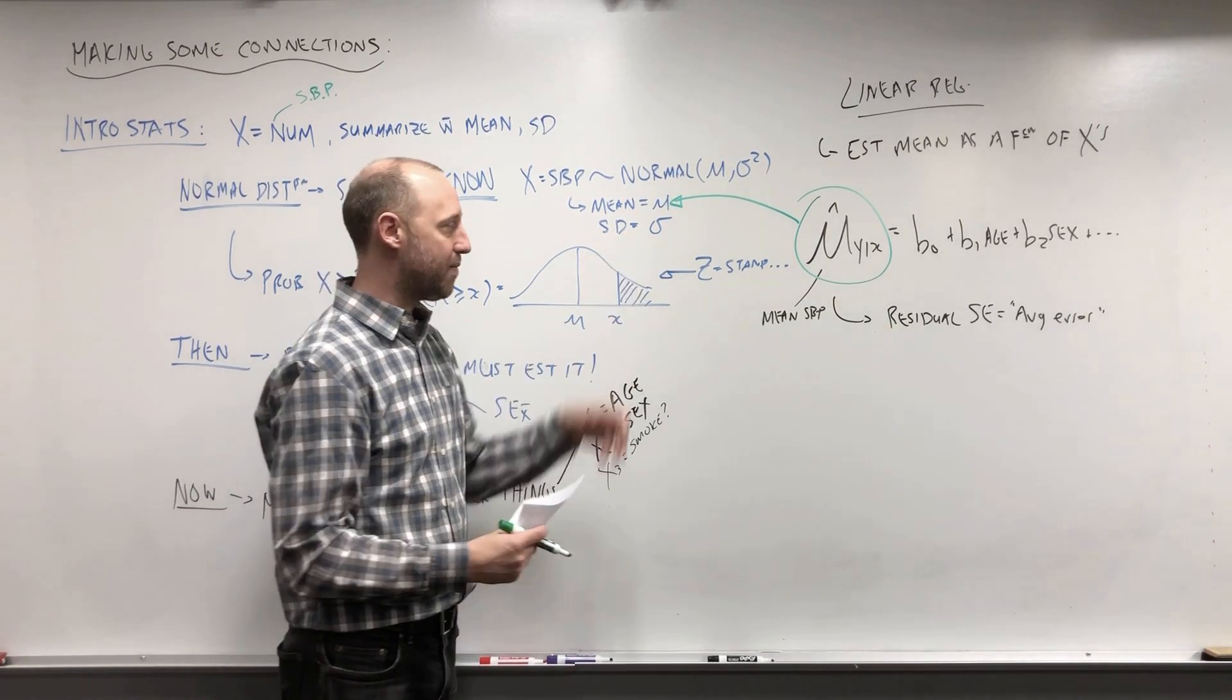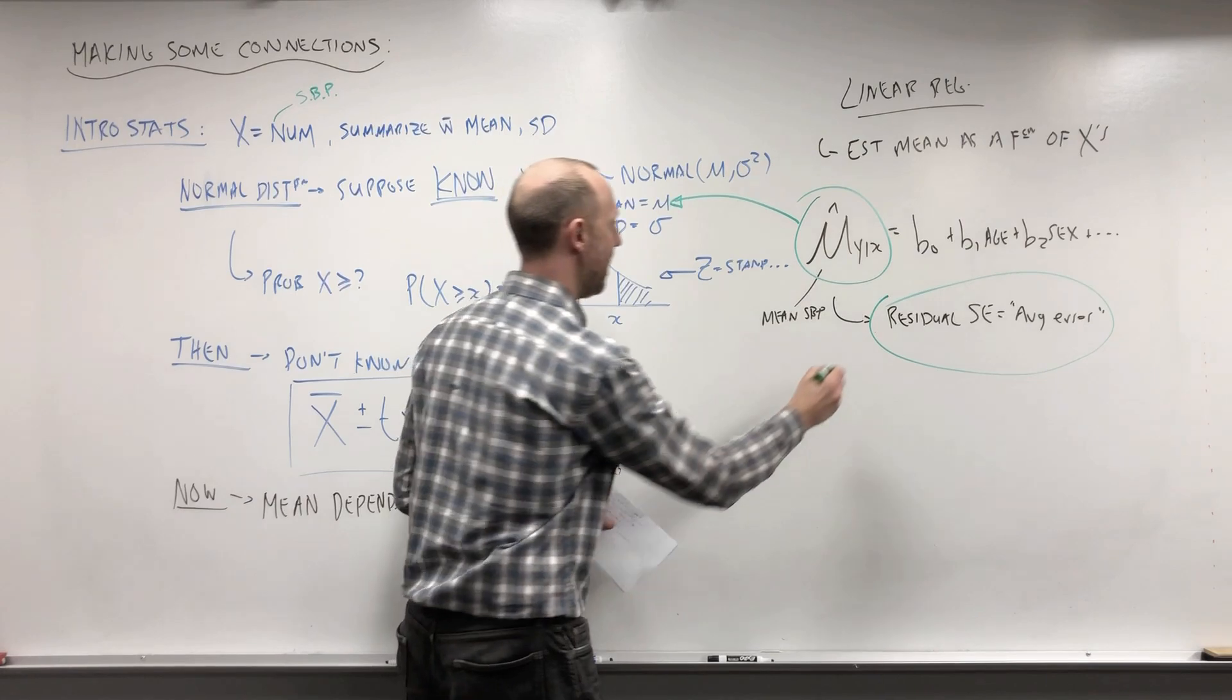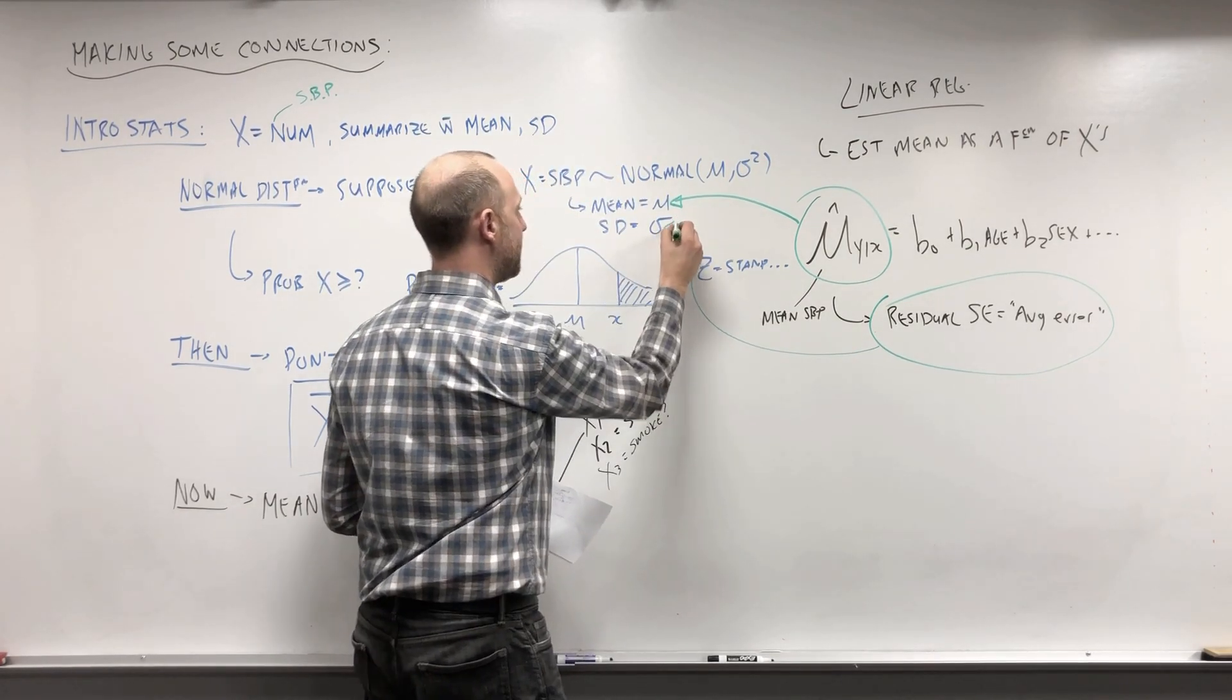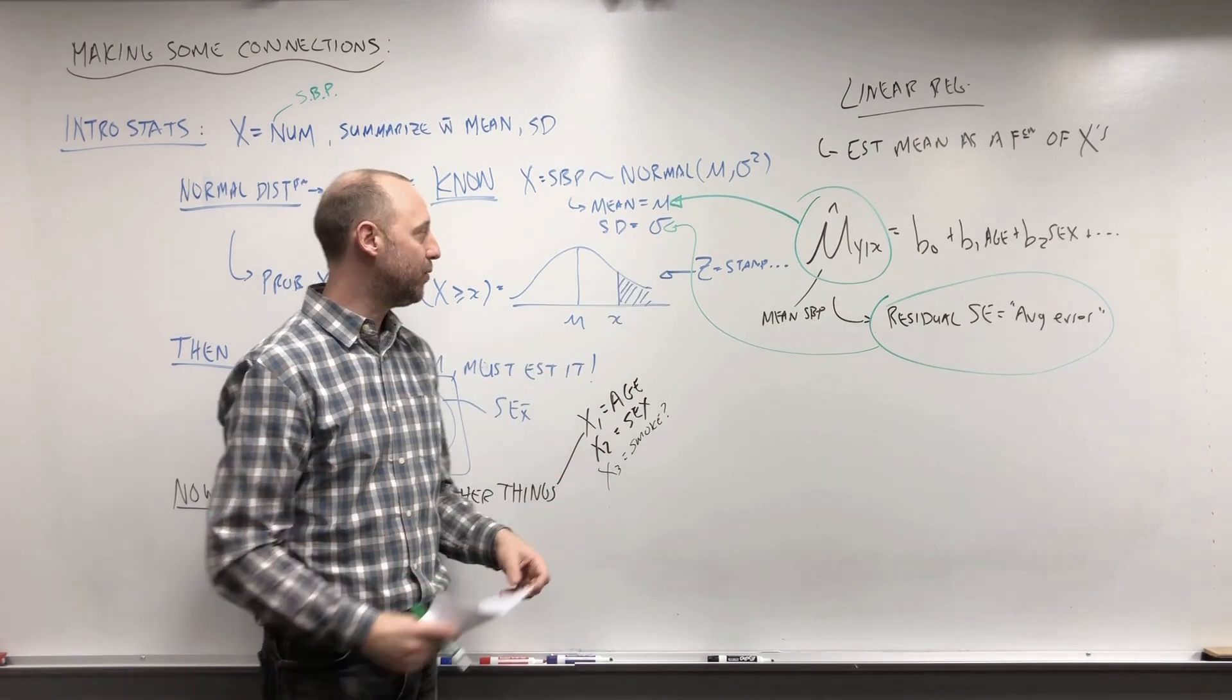We also know people are going to vary from that mean. From the regression model, we can get residual standard error, which we can use to get at this. What's the kind of average error? How far do people move from the mean?